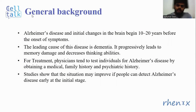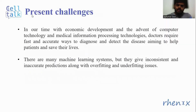Alzheimer's disease and initial changes in the brain begin 10 to 20 years before the onset of symptoms. The leading cause is dementia, and it progressively leads to memory damage and decreased thinking abilities. For treatment, physicians tend to test individuals by obtaining a medical, family, and psychiatric history. Studies show that the situation may be improved if people can detect Alzheimer's disease in earlier stages. Presently, with the advent of computer technology, medical information processing technologies require fast and accurate ways to diagnose and detect the disease to help patients and save their lives. Many machine learning systems are doing so, but they are giving inconsistent and inaccurate predictions along with overfitting and underfitting issues — these are the present challenges.